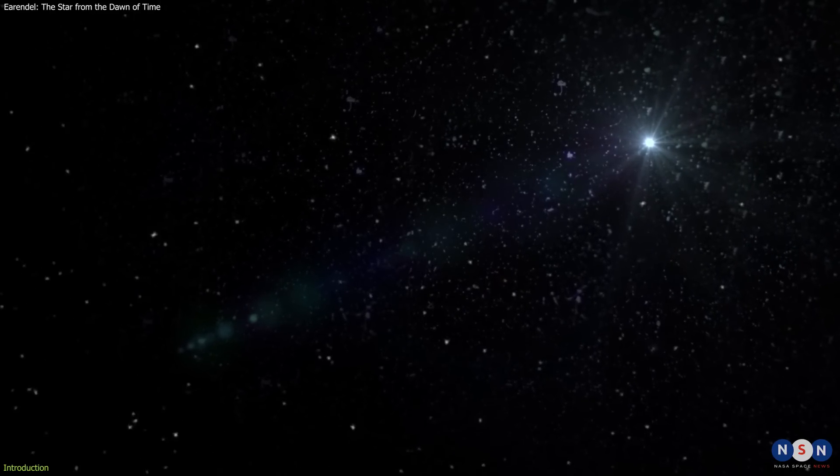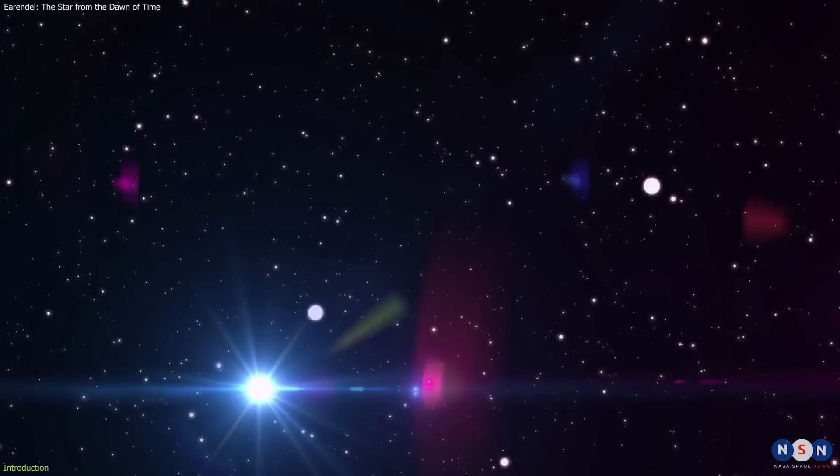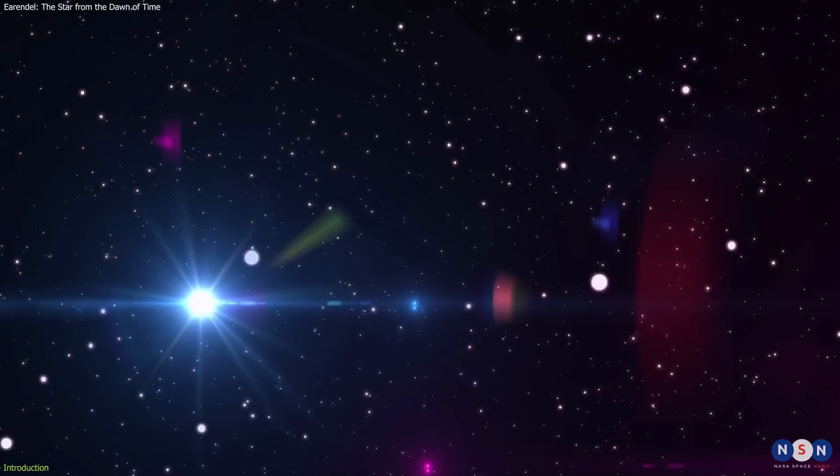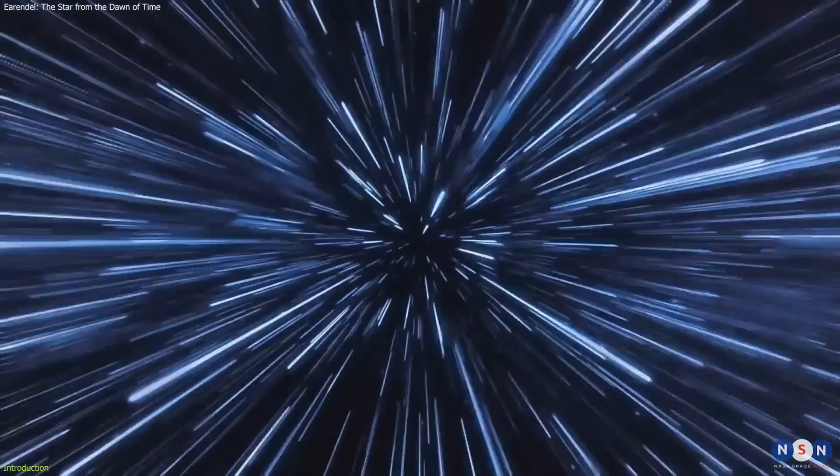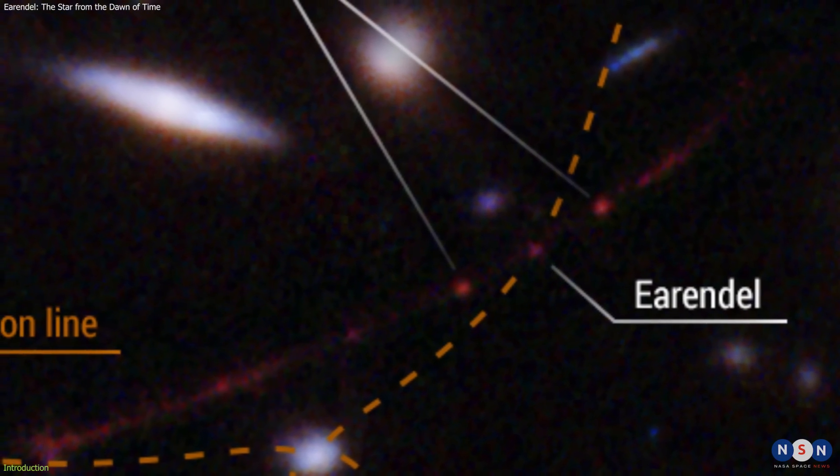Earendel is a remarkable star that shines from the early universe when the first stars and galaxies were forming. It is so far away that its light has taken almost 13 billion years to reach us, meaning that we are seeing it as it was when the universe was only 900 million years old.